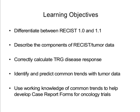Our learning objectives today will be to differentiate between RECIST 1.0 and 1.1, describe the components of RECIST and tumor data, correctly calculate target disease response, identify and predict common trends with tumor data, and use working knowledge of common trends to help develop case report forms for oncology studies.